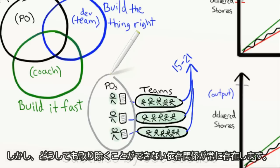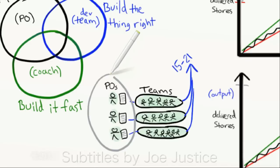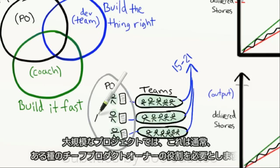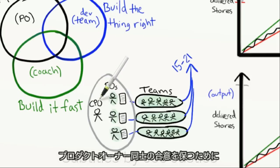So there needs to be some kind of sync between the product owners so that they build things in a sensible order and avoid sub-optimizing. In large projects, this usually calls for some kind of chief product owner role to keep the product owners synchronized.